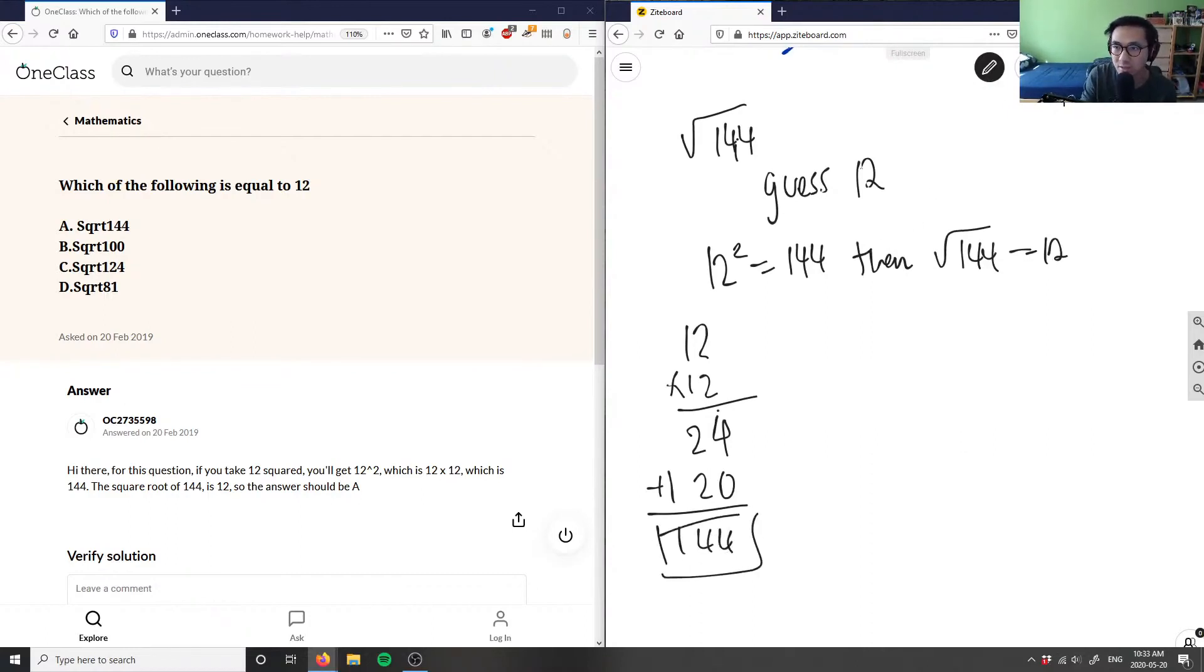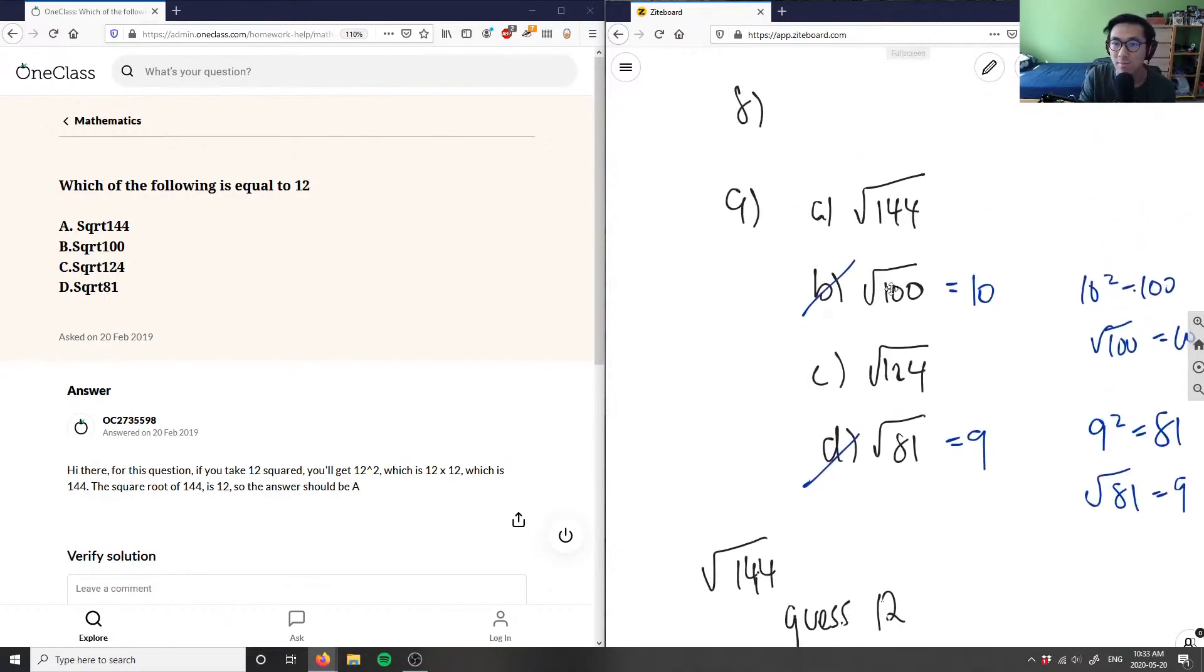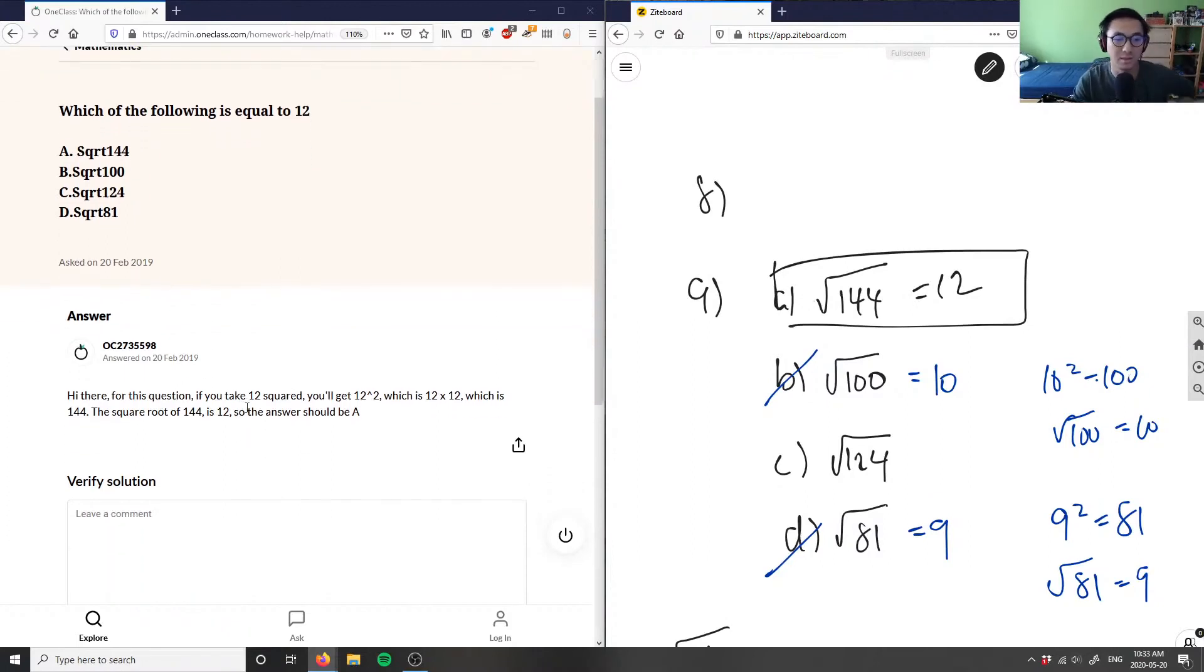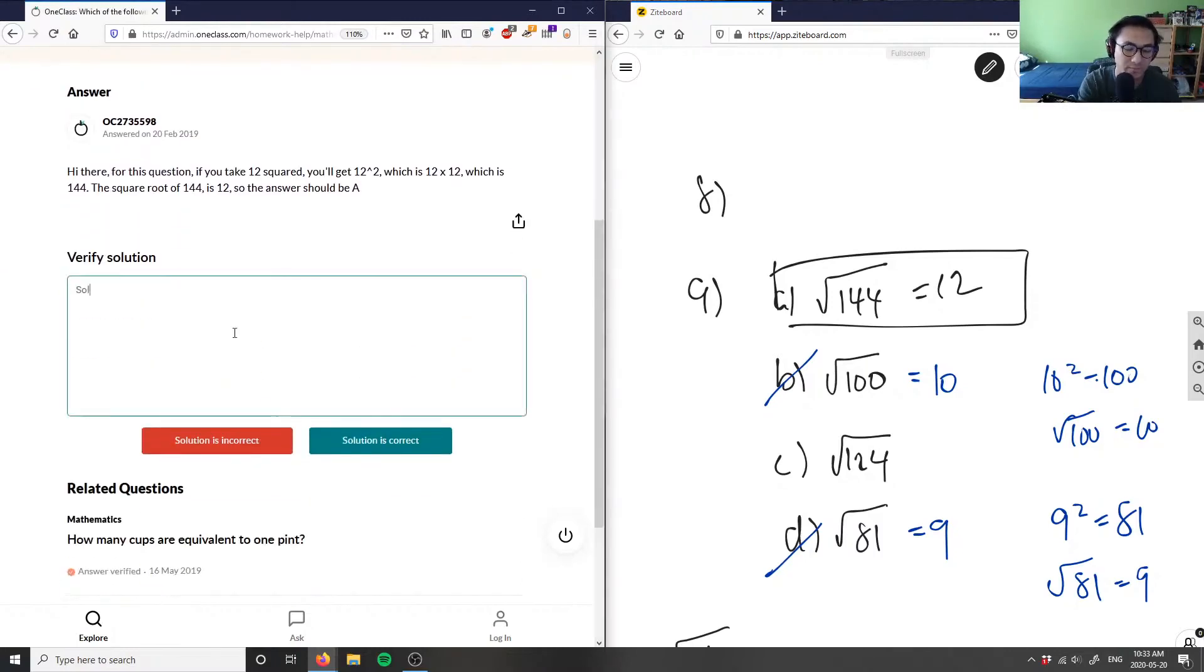So this here is actually the correct answer. We can say the square root of 144 is equivalent to 12. So this equals 12. So A here is our correct answer. As you can see, the solution here is correct. If you take 12 squared, you get 144, so therefore the square root of 144 is equal to 12.